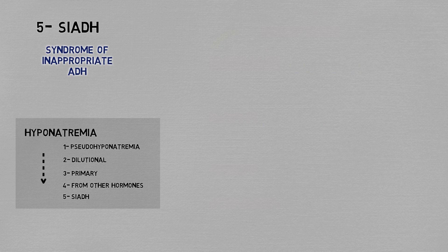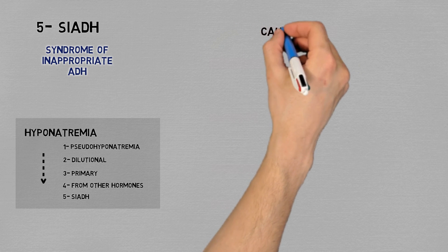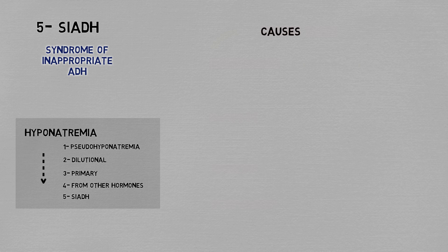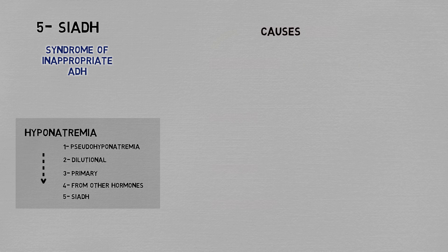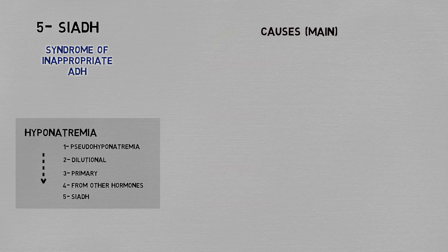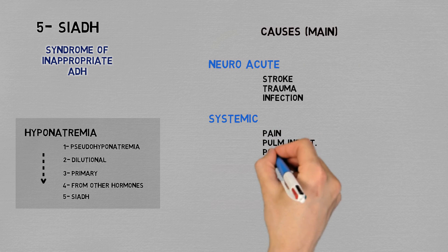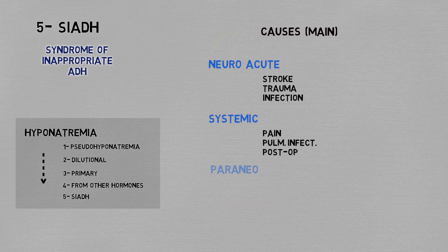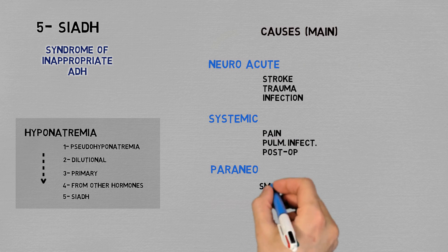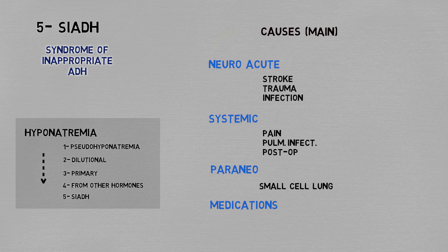SIADH has a million causes. Trying to memorize every one of them is pointless, but you should try to remember the main groups: any brain injury such as stroke, trauma, or infection; systemic derangements such as pain, lung infection, and post-surgical state; ectopic ADH secretion by tumors — the classic one being small cell lung cancer — and a lot of medications, most importantly anti-seizure and anti-depressants.